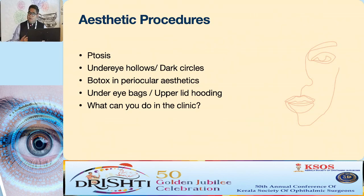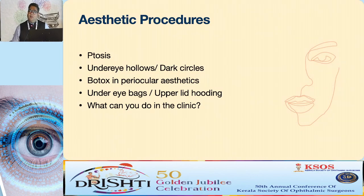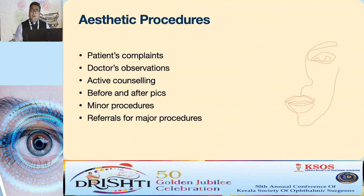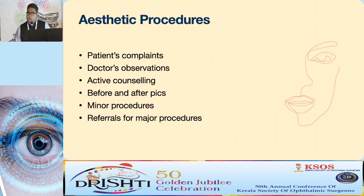When we talk about aesthetic procedures that oculoplastic surgeons look at, it includes ptosis. Patients come with complaints of under-eye hollows or dark circles and we often dismiss them. But we now have very targeted techniques to correct them. We can also use botulinum toxin to improve aesthetic appearance around the eye. A significant proportion of oculoplastic procedures arise from the doctor's observations — not just patient complaints. A patient may come for blurred vision and you notice a mild ptosis.